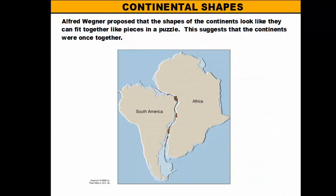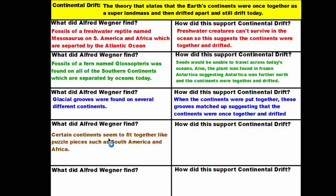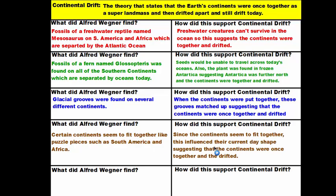Wegener also used obvious evidence: when he took a look at the shape of the coastlines, he noticed that the continents kind of matched up and fit together like puzzle pieces. Because they fit together like puzzle pieces, their locations must have influenced their shape when they were connected. Continents like South America and Africa can fit really nicely together, again suggesting that the continents must have been together and have drifted apart. Our fourth piece of evidence is the puzzle-shape fit of the continents — this influenced their current-day shape, suggesting they were once together and drifted.